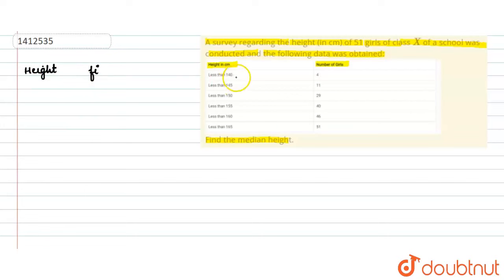Now, here we are talking about less than 140, so 0 to 140. If it is less than 145, then 140 to 145. Next, 145 to 150. Next, 150 to 155. Next, 155 to 160. Next, 160 to 165.